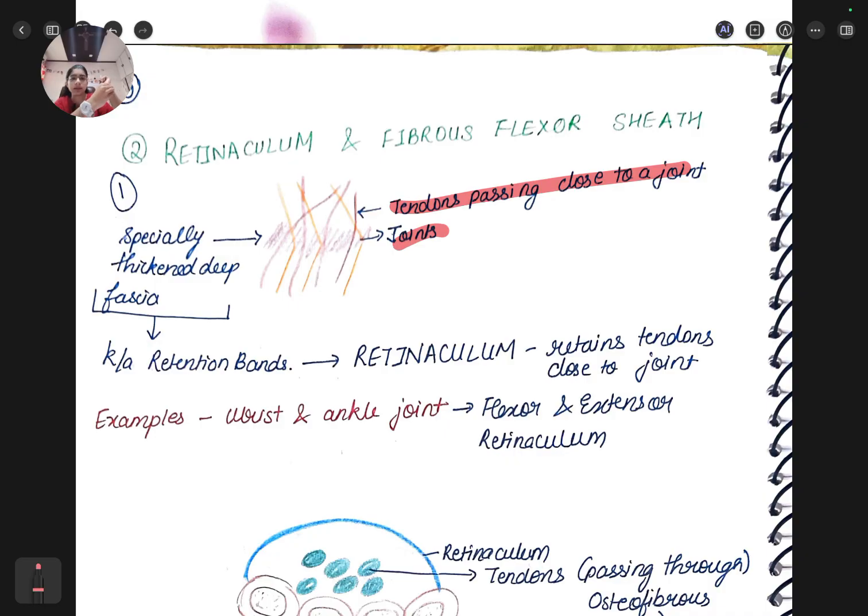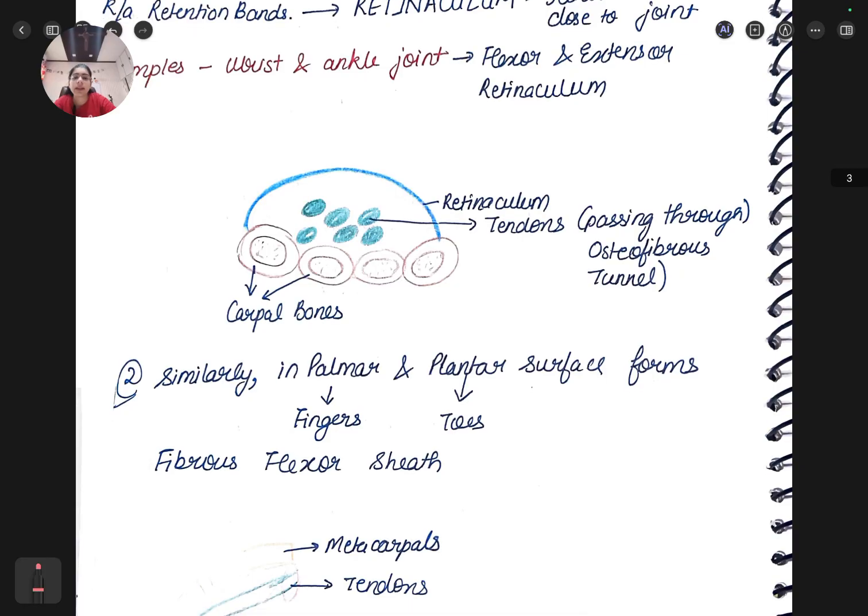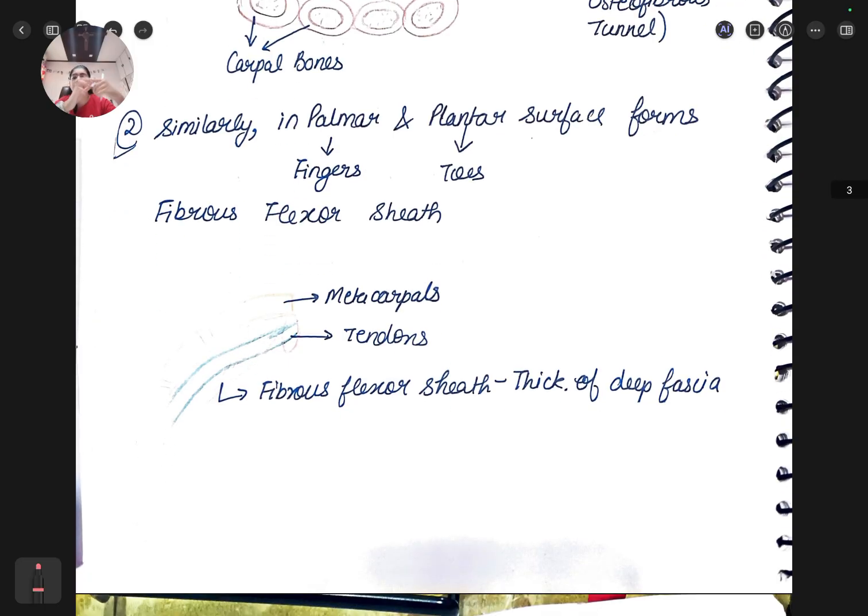The retinaculum and fibrous flexor sheath - these are specially thick deep fascia and the tendons passing close to the joint. When you press here there will be hard tubes-like structure, those are the tendons of muscles. These are passing to my hand and when I pull those, my fingers will also pull. Examples are wrist and ankle joint. In palmar and plantar surface we have the fibrous flexor sheath.